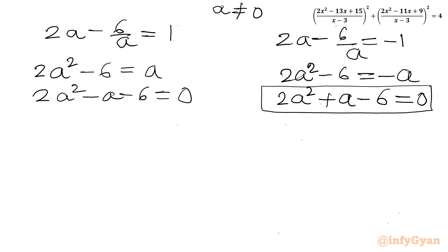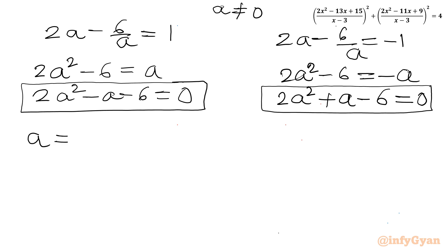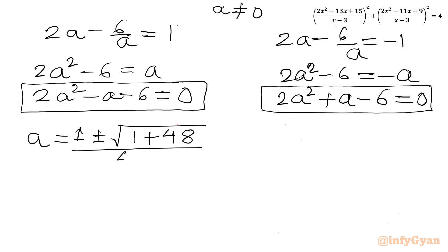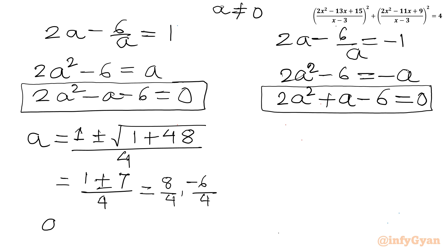We now have two quadratic equations to solve for a. Using the quadratic formula on 2a² - a - 6 = 0: a = (1 ± √(1 + 48)) / 4 = (1 ± √49) / 4 = (1 ± 7) / 4. With the plus sign: 8/4 = 2; with the minus sign: -6/4 = -3/2. So the first two values of a are 2 and -3/2.